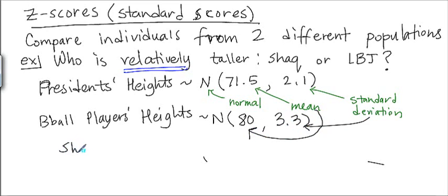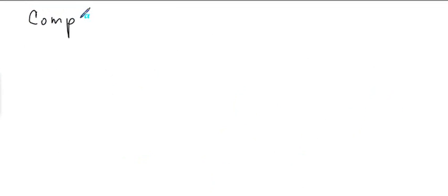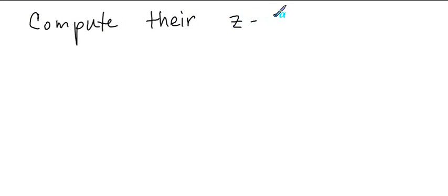We know that Shaquille O'Neal is 85 inches tall and LBJ was 75 inches tall. To compare the two — since they're in two different categories — I have to bring them to the same field, the same level. To do that, I have to compute their Z-scores, or their standard scores.